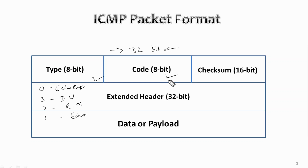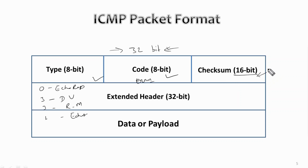The code field is another 8-bit field in the ICMP packet format that carries additional information about the error message and type. Then we have the checksum field, which is the last 16 bits of the initial 32-bit header. The checksum is used to check the number of bits of the complete message and enables the ICMP tool to ensure that complete data is delivered.